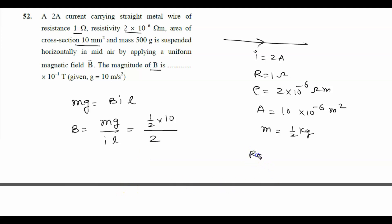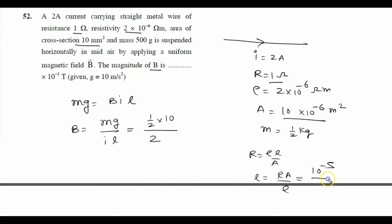We know R = ρL/A, so L = RA/ρ. Substituting: R = 1 ohm, area = 10×10⁻⁶ = 10⁻⁵ m², and ρ = 2×10⁻⁶ ohm·meter. Solving gives L = 10⁻⁵ / 2×10⁻⁶ = 10/2 = 5 meters.